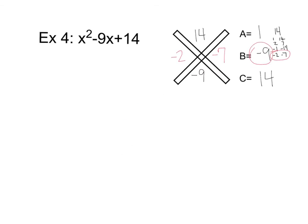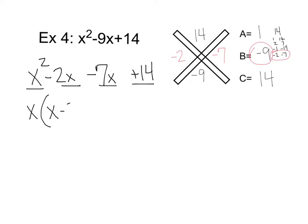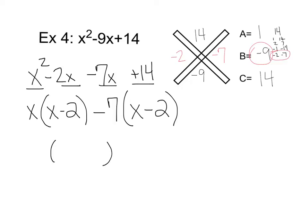Now we'll run through the rest of the problem. We build four terms: first term x squared, last term 14, and middle terms negative 2x and negative 7x. Factoring by grouping, we get x times x minus 2. We factor out a 7 from the second group, dividing 14 by negative 7, and get x minus 2 again. Factoring out the common factor x minus 2, we get x minus 2 times x minus 7 as our final answer.